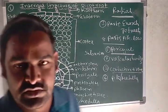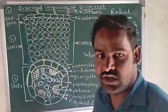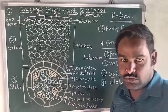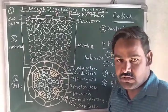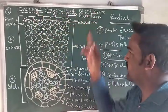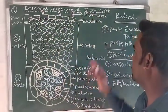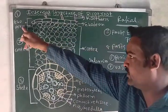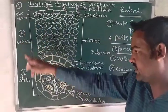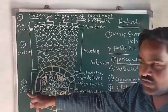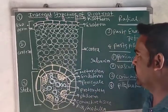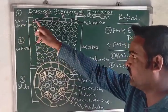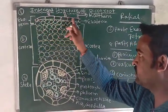Now I will explain the internal structure of a dicot root. The internal structure of a dicot root exhibits three parts: exoderm, cortex, and stele.